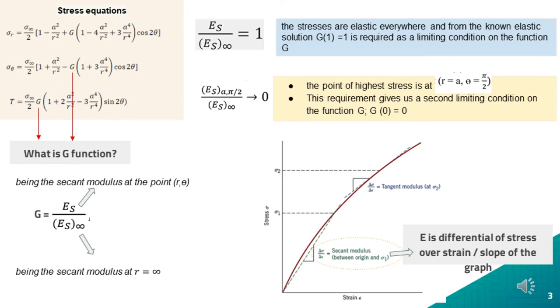It can be noticed that in all uniaxial solutions there are unknown g functions, where the g unknown is the second modulus at a point r and theta, which denotes a polar coordinate. That gives us two conditions. The first condition will be the stresses are elastic everywhere and known as elastic solution, g equals to 1. And the second limiting condition would be equal to 0, whereby the point of higher stress is at r equals to a and theta equals to pi over 2.